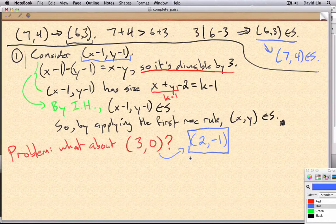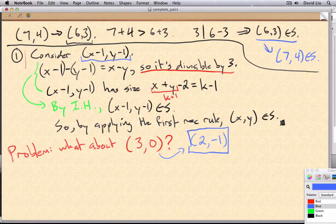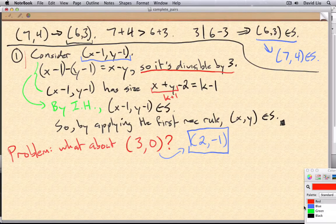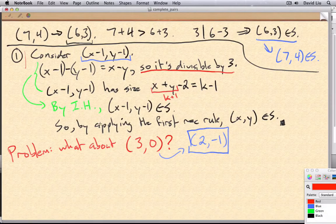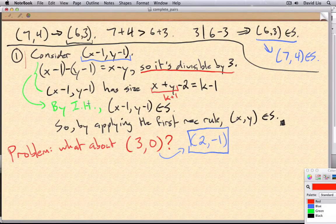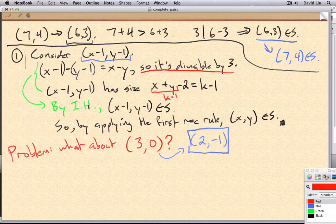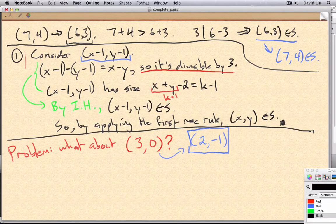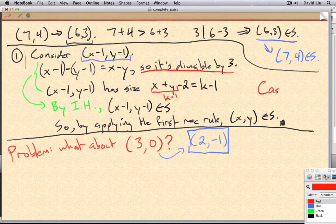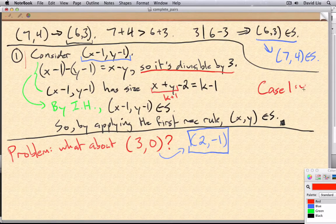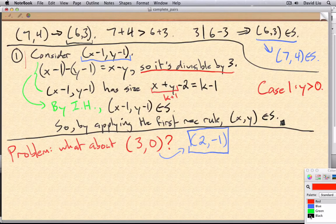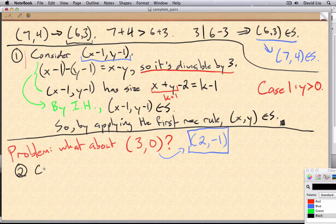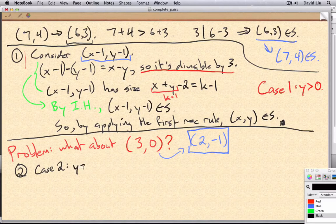Okay, so how do we fix this? This problem only happens when y is 0. And you should be comfortable enough with proofs now to know that if you have an argument that only works some of the time, you don't need to get rid of it. You should try to split up your proof into cases. So this over here, above the line, that's case 1, where y is greater than 0. And all we need to do to fix our proof is a case 2, where y is equal to 0.